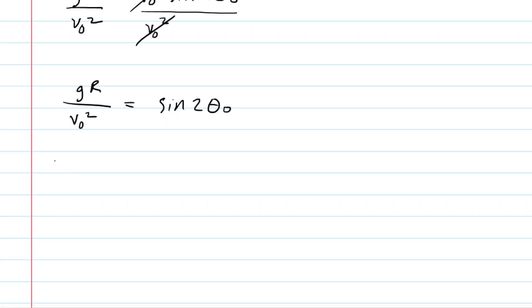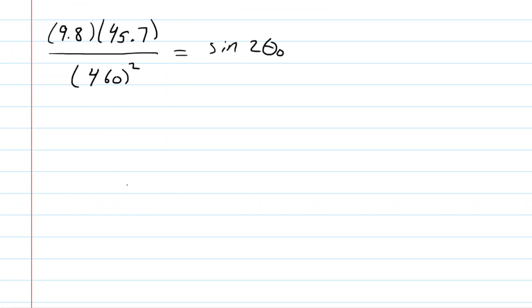Let's plug in the known data. We divide both sides by the same thing, 460 squared. This will equal the sine of twice the angle. If you simplify the left side on your calculator, you should get 0.0021165 approximately, and then you want to solve this for the theta ultimately, but we've got to get rid of that sine first.